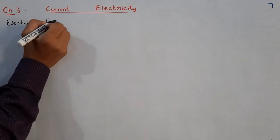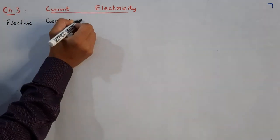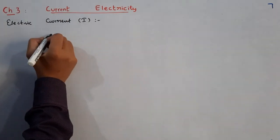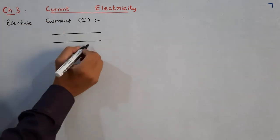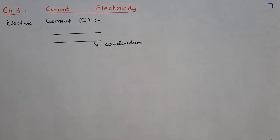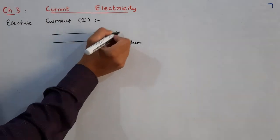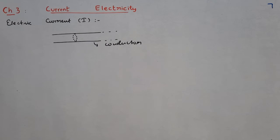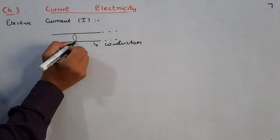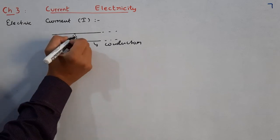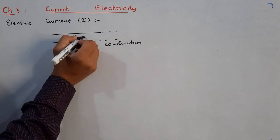Students, you already have some basic idea regarding these topics which you have read in standard 10th. You know that we use the symbol I for electric current. What is the meaning of this electric current? Suppose we imagine there be some conducting wire — so this is a metallic conductor — and this is the wire. We choose a cross section on this wire.